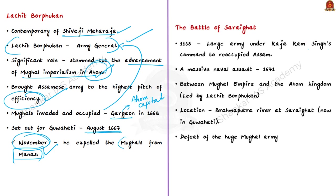In 1668, Aurangzeb dispatched a large army under Raja Ram Singh's command to reoccupy Assam. Raja Ram Singh launched a massive naval assault, leading to the Battle of Sarai Ghat in 1671. This battle took place between the Mughal Empire, led by Kachwaha King Raja Ram Singh I, and the Ahom Kingdom, led by Lachit Borphukan, on the Brahmaputra river at Sarai Ghat in present-day Guwahati. The battle lasted one full day and resulted in the defeat of a huge Mughal army by a small Assamese contingent led by Lachit Borphukan, which is why he is celebrated as an important personality in Ahom and Assam's history.